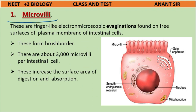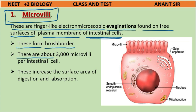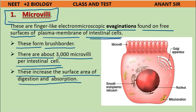Microvilli are finger-like, electron-microscopic evaginations found on the free surfaces of the plasma membrane of intestinal cells. They form a brush border. There are about 3,000 microvilli per intestinal cell, and they increase the surface area for digestion and absorption.